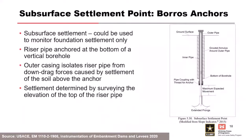A boros anchor is more suitable for soft clay. When installed, extended prongs at the bottom are deployed into the clay and seated at that interval. As the structure settles, it shows settlement relative to where the instrument is deployed — for example, at a depth of ten or twenty feet from the surface of your embankment.